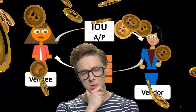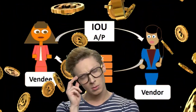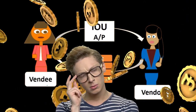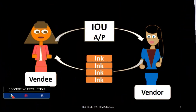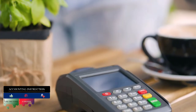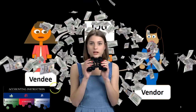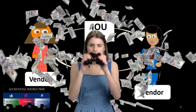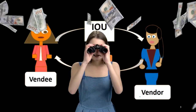We need to know these two terms so that if we see them in the business world or in a book problem, we know which side of the transaction we're talking about. Are we talking about the purchaser of the ink — the vendee — or are we talking about the seller of the ink — the vendor?